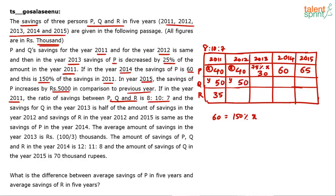Since y = 50, Q's savings in 2011 and 2012 are both 50. Next, Q's savings in 2013 is half of savings in 2012, so 2013 = half of 50 = 25.